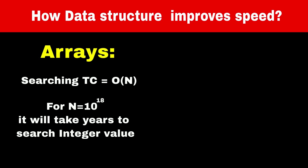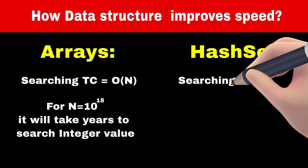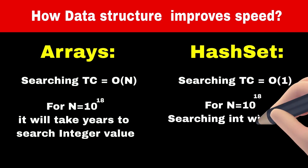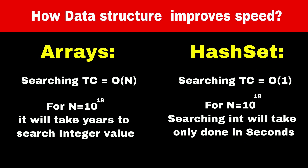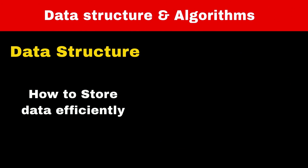Now instead of array, consider we use another data structure called hash set, which has constant time complexity. In a hash set, for searching elements, we don't need to traverse all elements, so this task can be done in seconds. You can see how we improve the speed of our system just by selecting the right data structure. Data structure allows us to organize and store data so that the required data can be searched almost instantly.